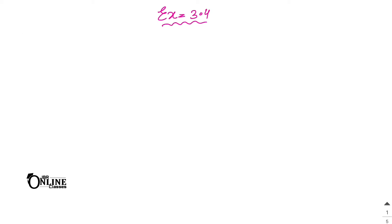In sum number 1, find the square root of each of the following by division method. The first number is 2401. First, write down the number, then make pairs from right to left — remember, from right to left. So you get the first pair and the second pair.